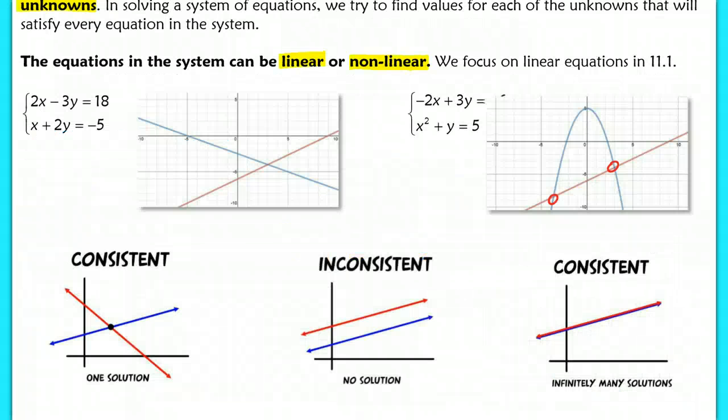Now just to introduce some more vocabulary to you, a consistent system is one where you have a solution. So in this case we have a consistent system with two lines that intersect at one point, which is why you have one solution. An inconsistent system is where you don't have any point that satisfies both simultaneously. So in this case you have a set of parallel lines, and you will have no solution. Finally you have another consistent system, where you have the same line graphed with infinitely many solutions, because every single point on both lines satisfies the other.